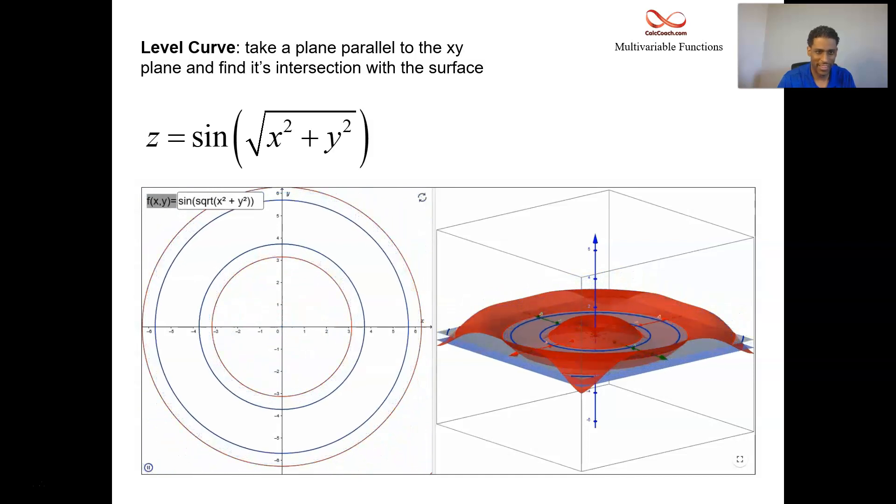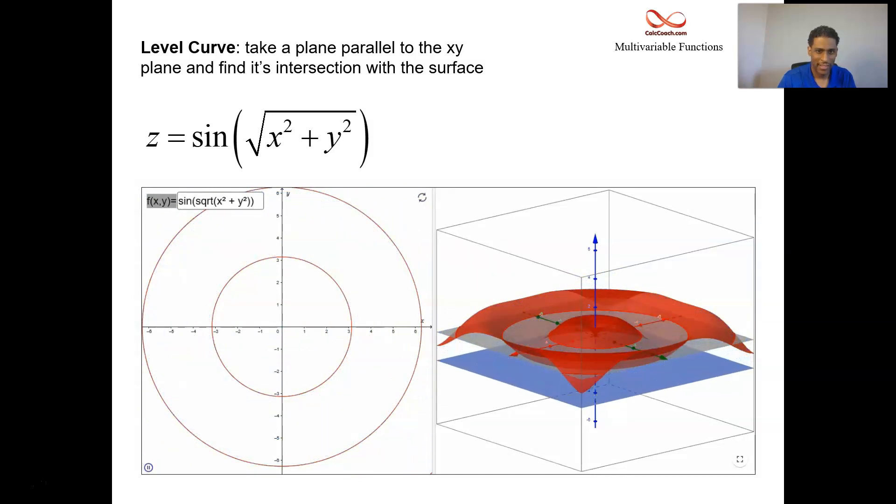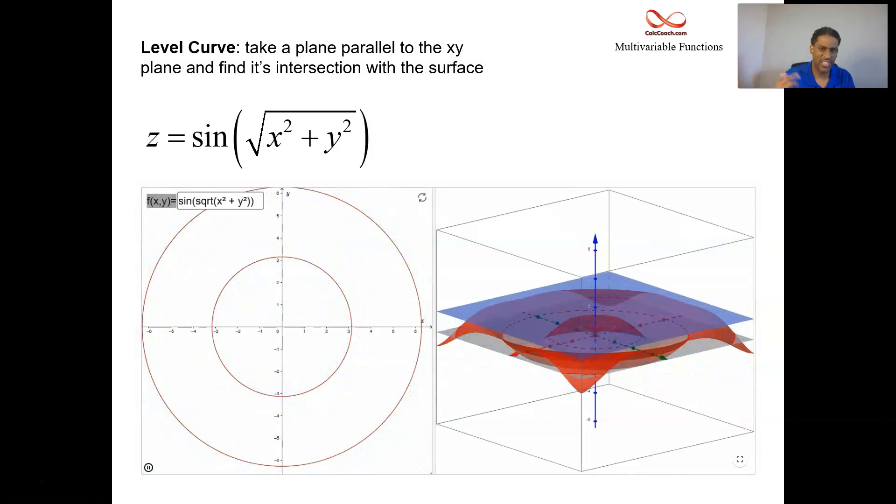On the right is the three-dimensional graph. On the left is the two-dimensional level curve graph. As the blue plane moves up and down, it'll populate the graph that's on the left with the level curve. In this particular function, the level curves happen to be actual circles. If you set z equal to a constant, what you'll have will be a circle. Those red circles are the circles for the maximums. Pretty cool animation I found online.